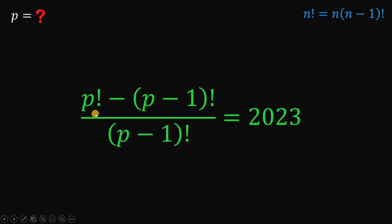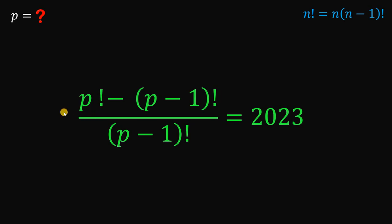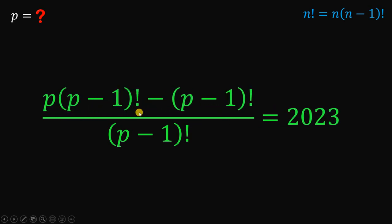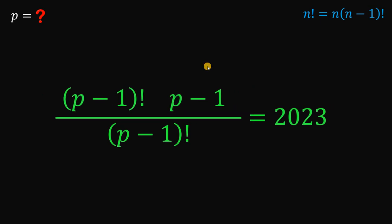So we can rewrite this P factorial as follows. We have P multiplied by P minus 1 factorial. Now, the question is why we do that. Because take note that we also have P minus 1 factorial right here, so we can factor out P minus 1 factorial like this.